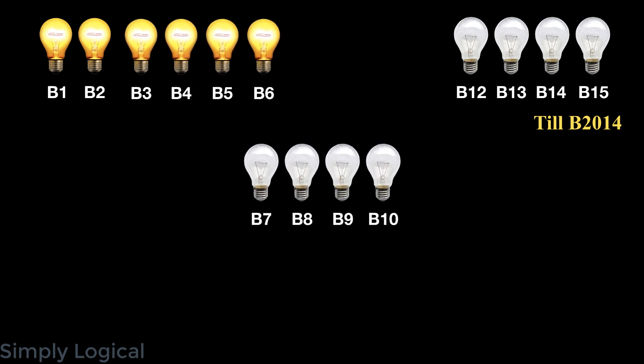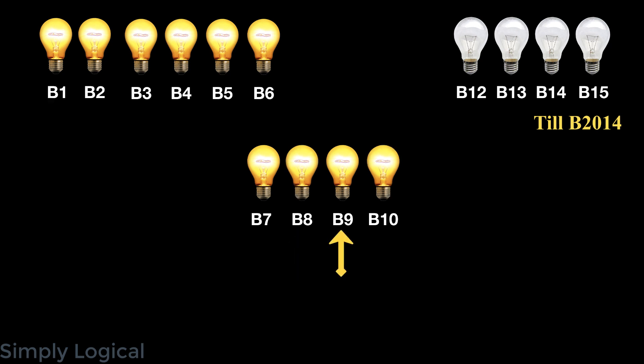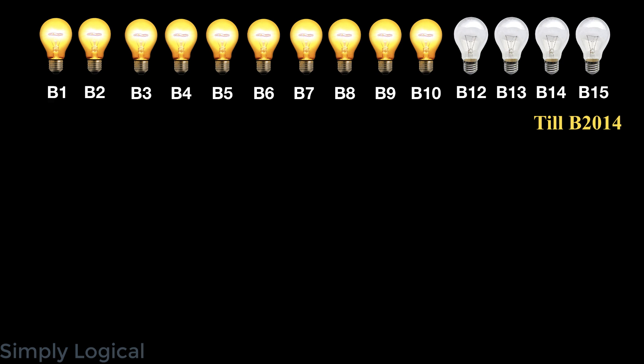Once this is done, consider another group adjacent to group 1 — call it group 2, with bulbs B7, B8, B9, B10. Initially all four are off. Choose the second bulb in group 2 (B8) and turn its neighbors B7 and B9 on. Then choose B9 and turn B8 and B10 on — all four bulbs in group 2 are now on. By repeating these steps, we can turn all 2012 bulbs on. Since there are 2012 bulbs, we need 503 groups (4 × 503 = 2012), and applying the above steps to each group turns all 2012 bulbs on.